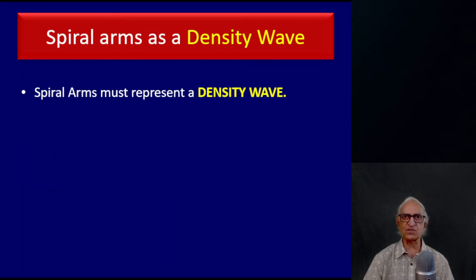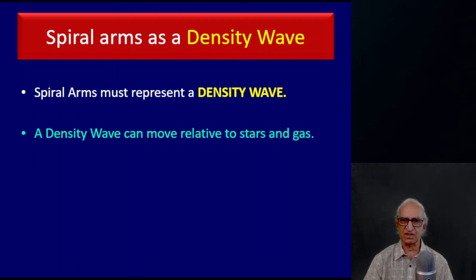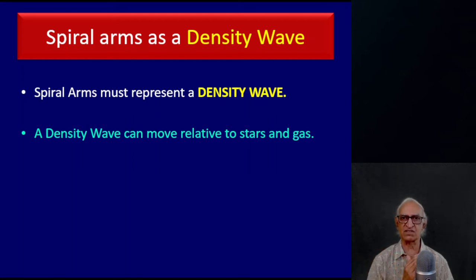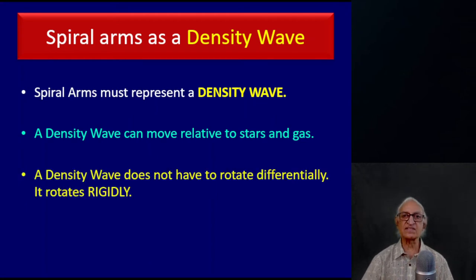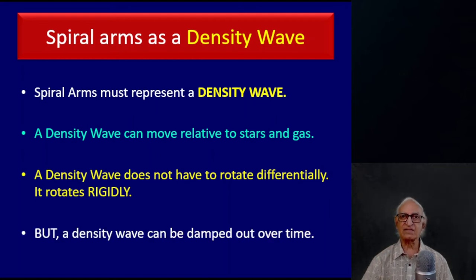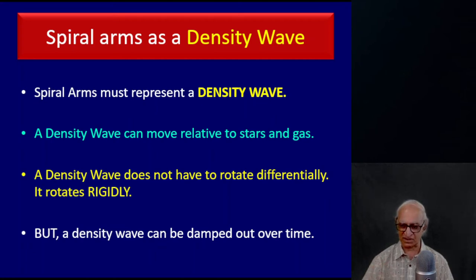Bertil Lindblad's first conclusion is that the spiral arms must represent some sort of a density wave. A density wave can move relative to the stars and gas. A density wave does not have to rotate differentially — it can rotate rigidly. But a density wave can also be damped out over time, just as sound waves in a gas, liquid, or solid can be damped out after a certain time.